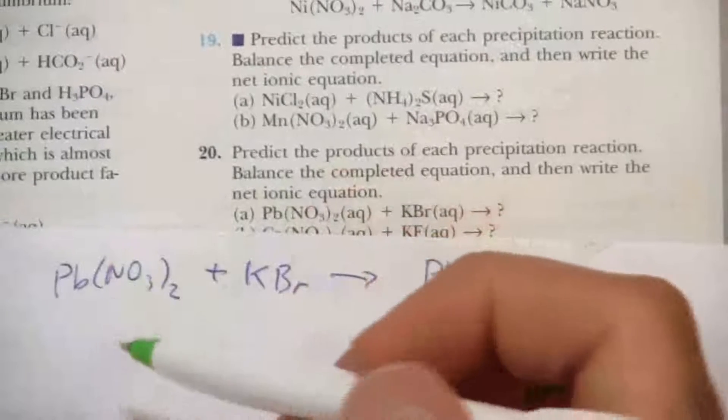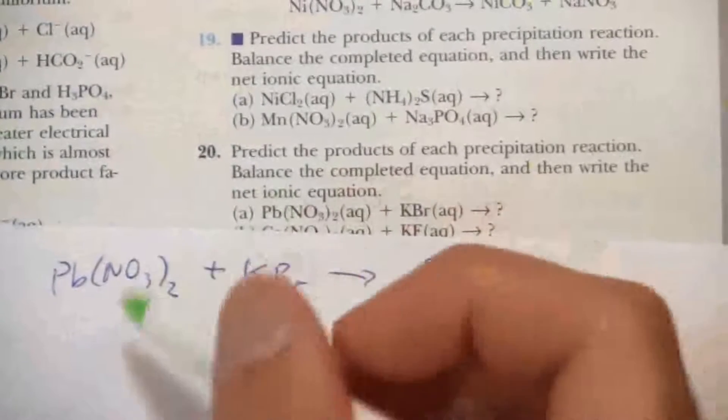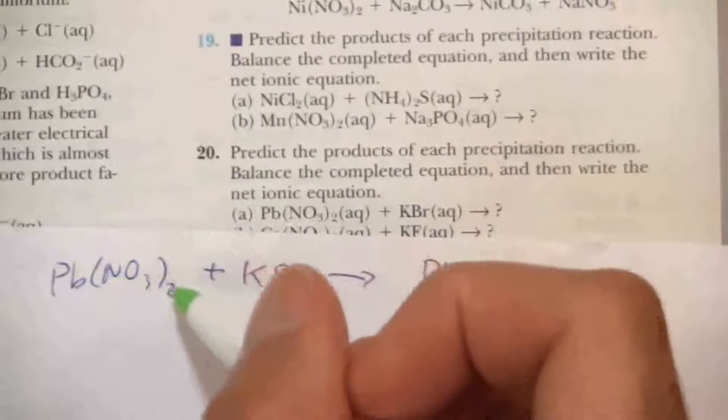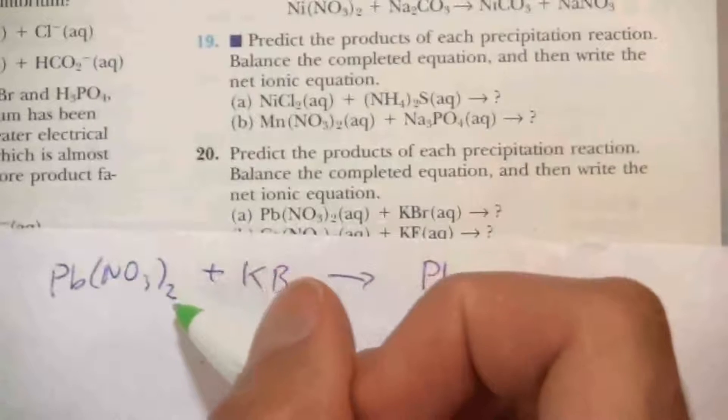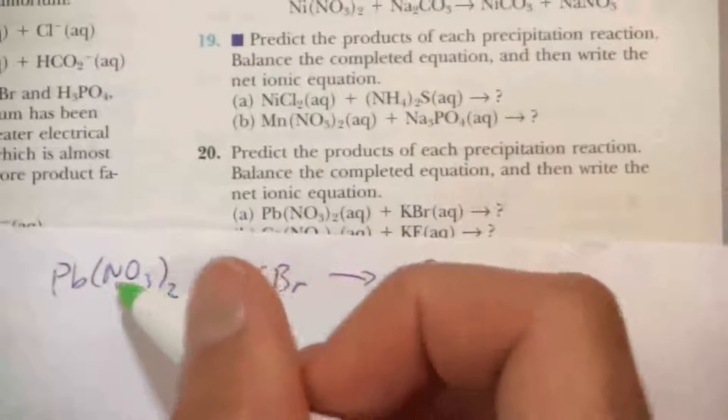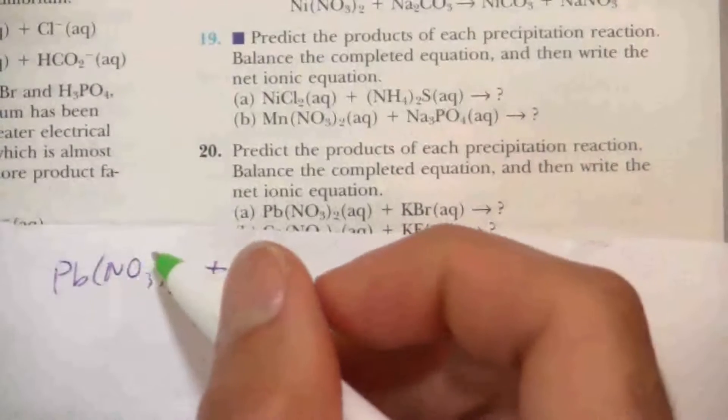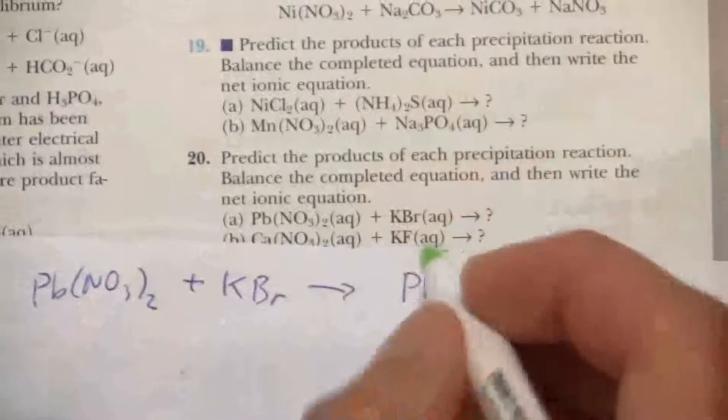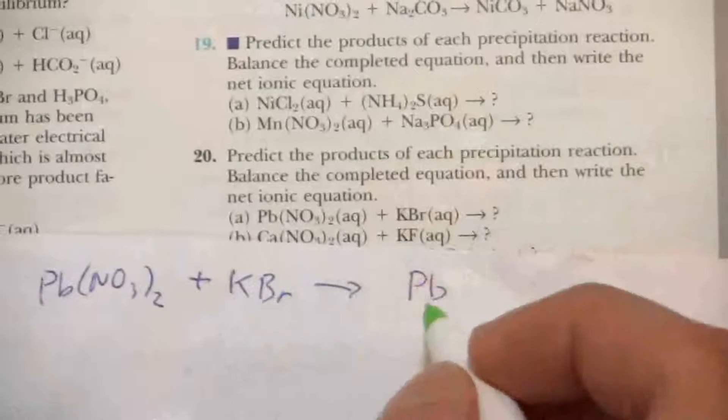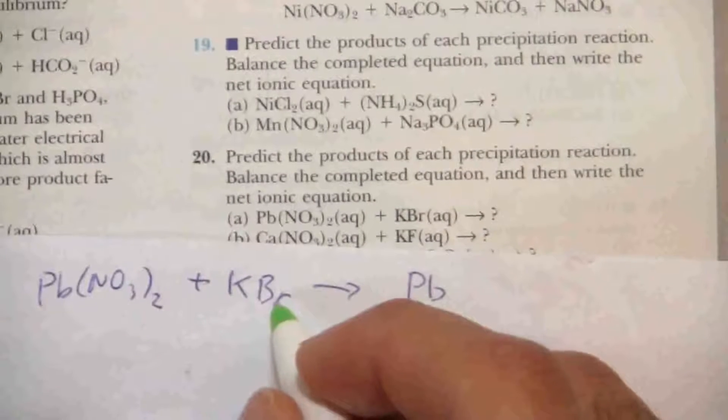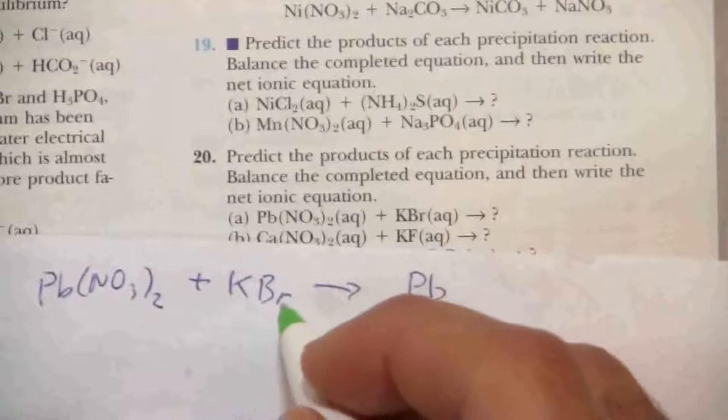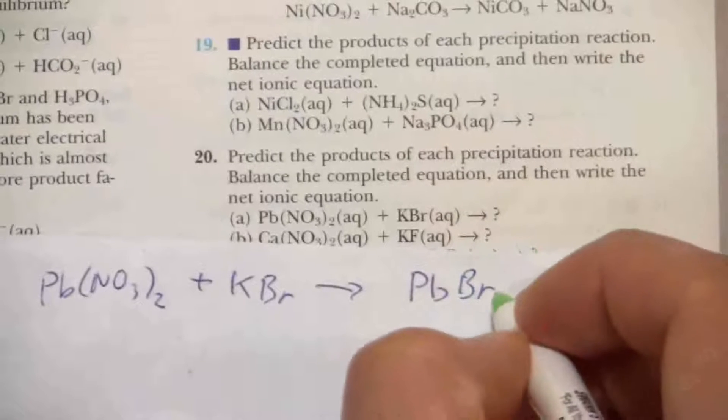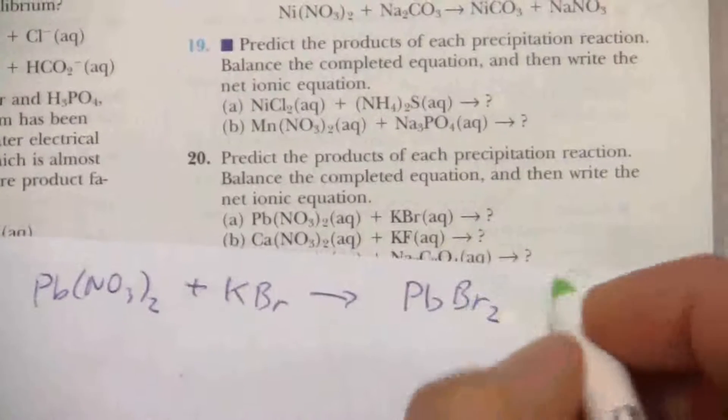Therefore, we have to imply or deduce its charge from the compound that it's with. It's with nitrate. It has two nitrates. Each nitrate is a negative one. You should know that. So the lead must be a positive two. And if the lead is a positive two, when it joins up with bromide, it needs two bromide, because the bromine forms a negative one charge. So that'll be PbBr2.